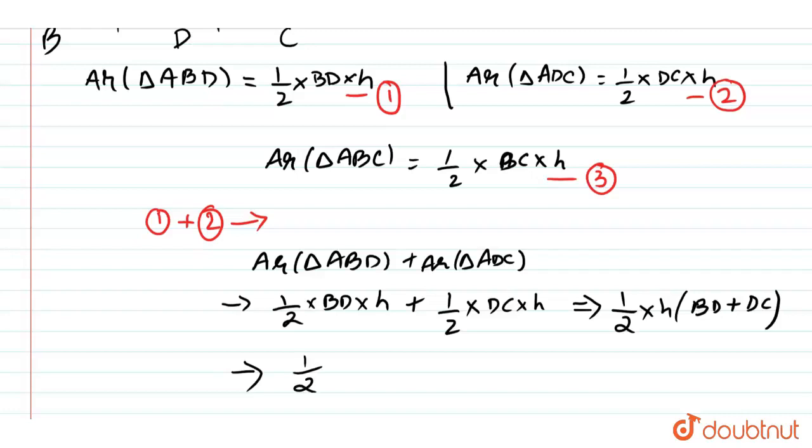So we can take it as half into H, and BD plus DC would be BC. So this results in the equation three, which is area of triangle ABC.